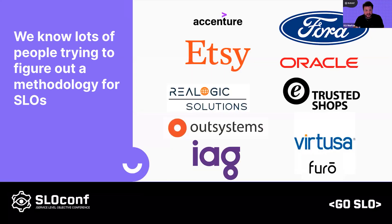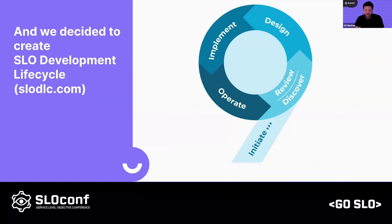A bunch of us have been working on this, and in my job I get to work with lots of cool companies, both as customers and partners. A lot of us were talking about how to build a better process for SLOs. This group of companies got together, built a working group, and created the SLO DLC, which is now live on slowdlc.com. It's an open source methodology that includes a handbook, examples, and templates for building SLOs. We even created a cool logo — a figure nine.